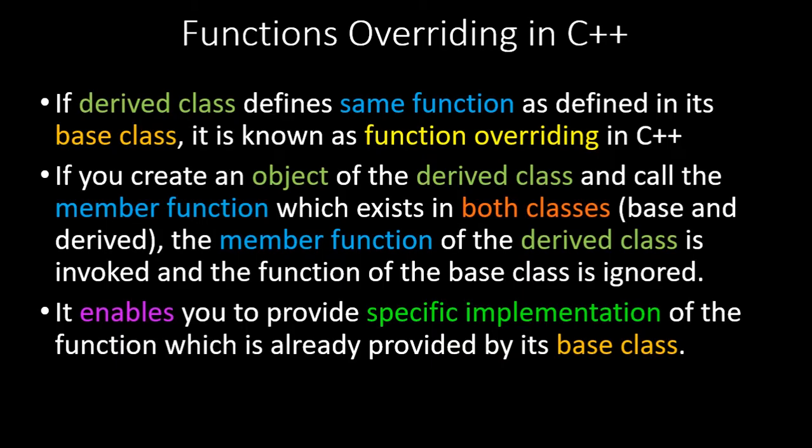If you create an object of the derived class and call the member function which exists in both classes, the member function of the derived class is invoked by default and the base class function is ignored. This enables you to provide a specific implementation of a function already provided by its base class.